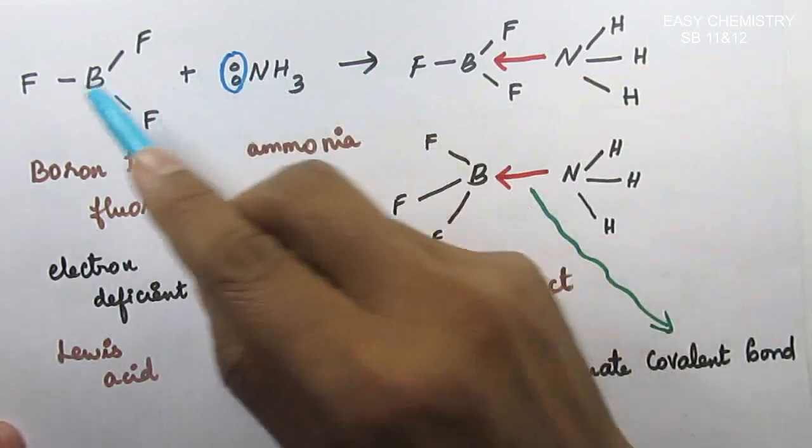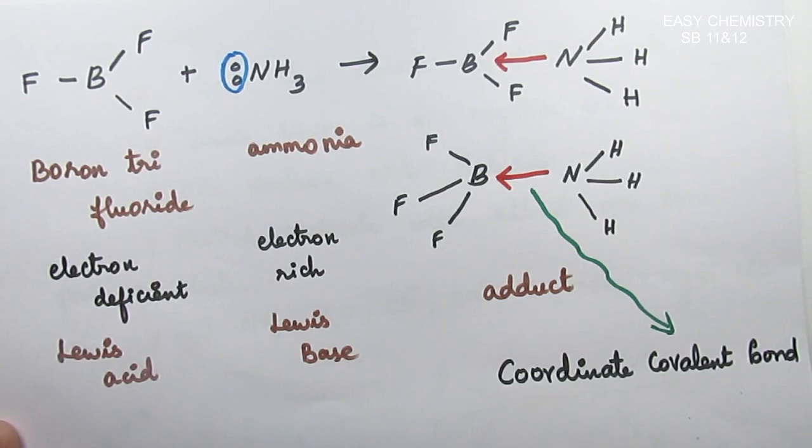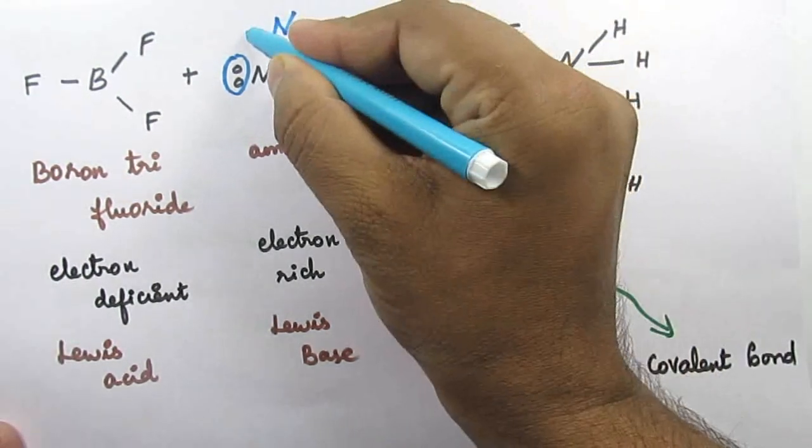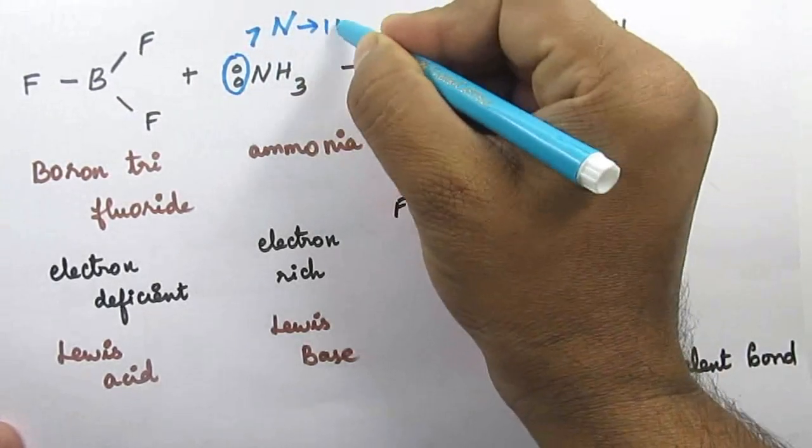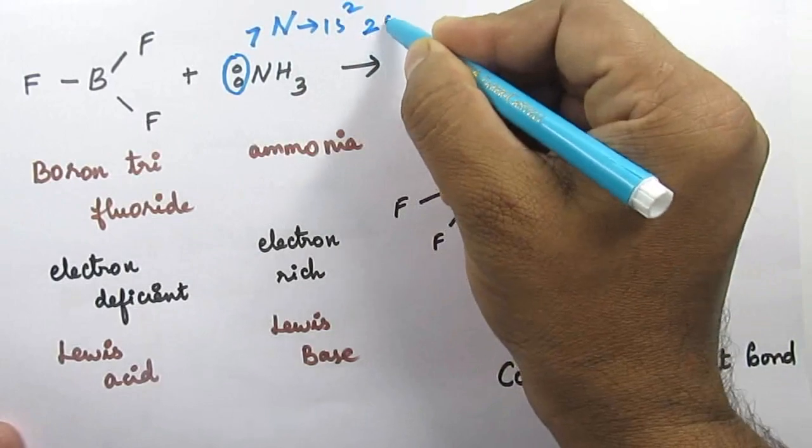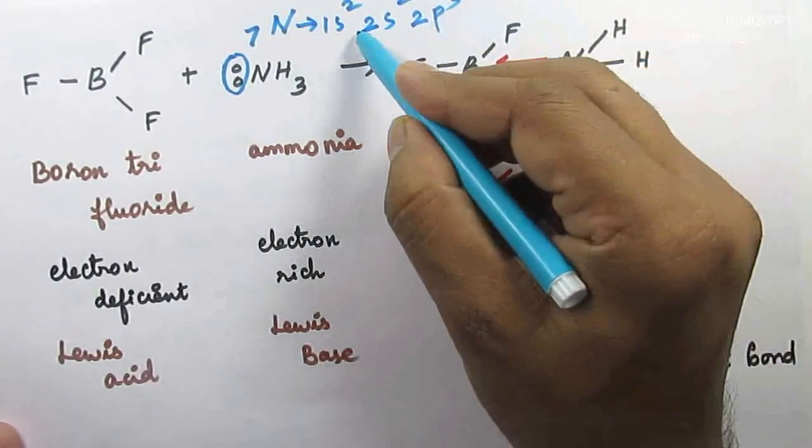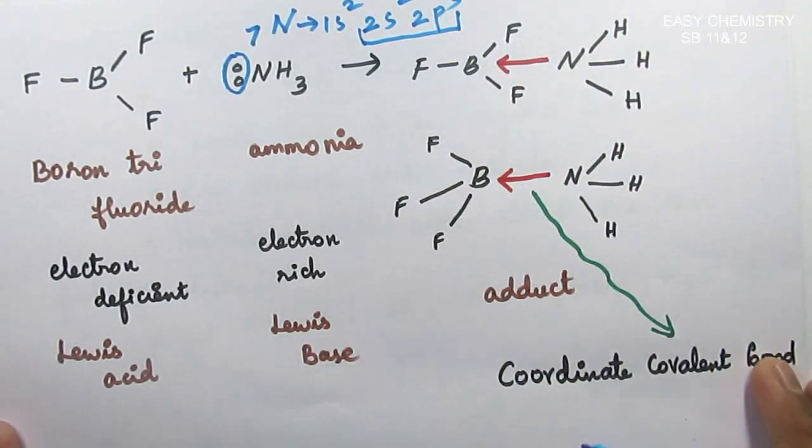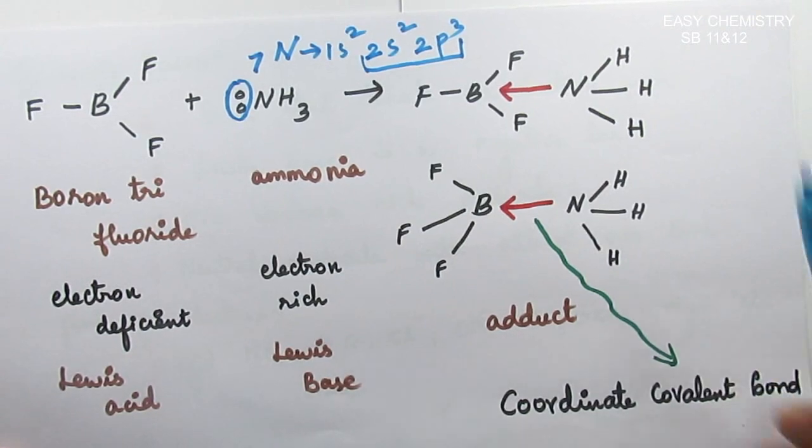So nitrogen can donate it. Let's see nitrogen. Atomic number 7, 1s2, 2s2, 2p3. This is the valence shell. Last shell, main shell. Last shell is the valence shell.